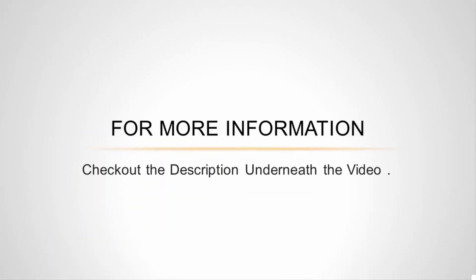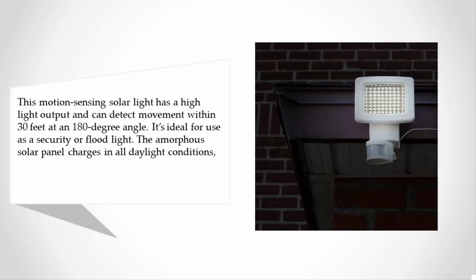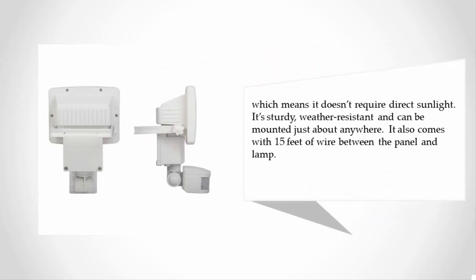Halfway through our list at number three, this motion-sensing solar light has a high light output and can detect movement within 30 feet at a 180-degree angle. It's ideal for use as a security or flood light. The amorphous solar panel charges in all daylight conditions, which means it doesn't require direct sunlight.